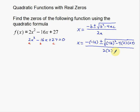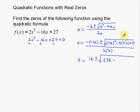Now we've got to do all the rest — this is basically just arithmetic. x is equal to positive 16 plus or minus the square root of 16 squared, which is 256. Now 4 times 2 is 8, and 8 times 27: 8 times 20 is 160, and 8 times 7 is 56, so that's 216. So we have 256 minus 216, all divided by 2 times 2, which is 4.